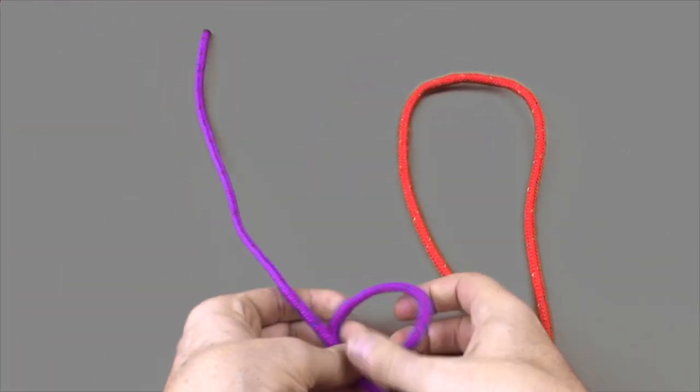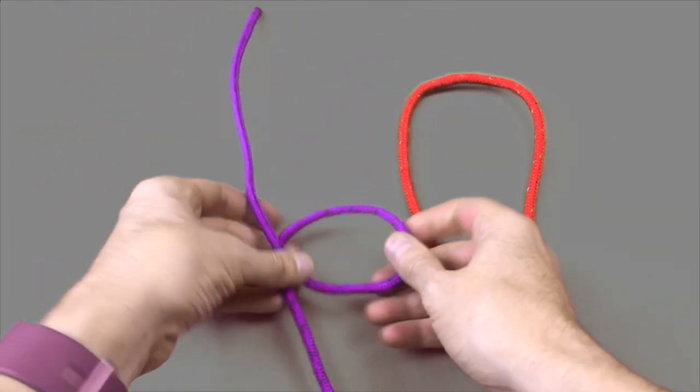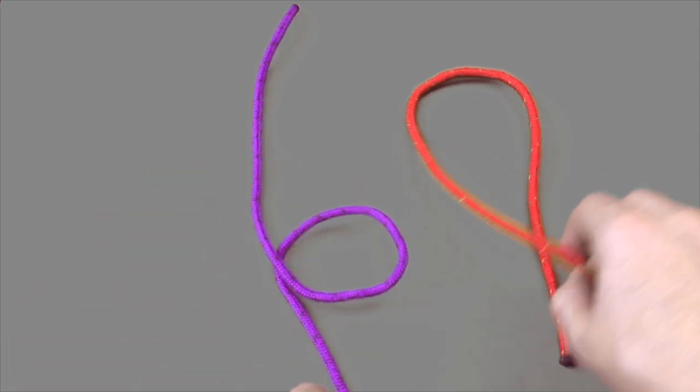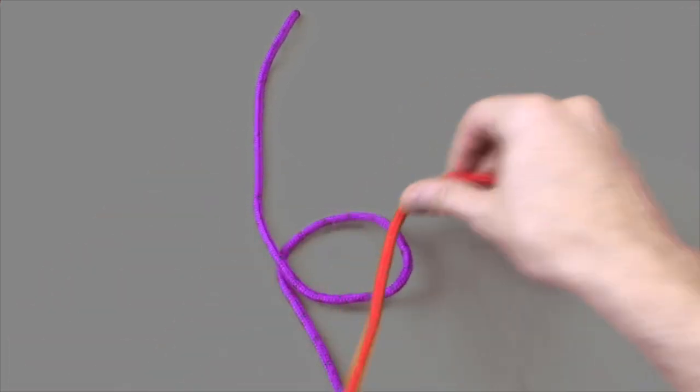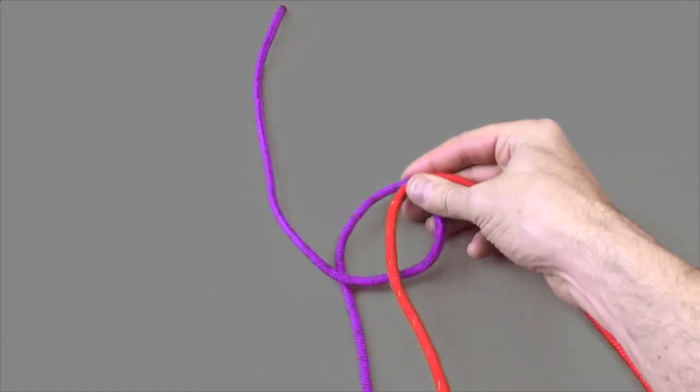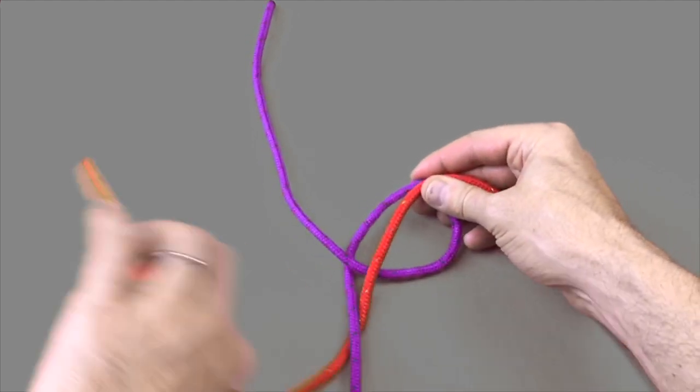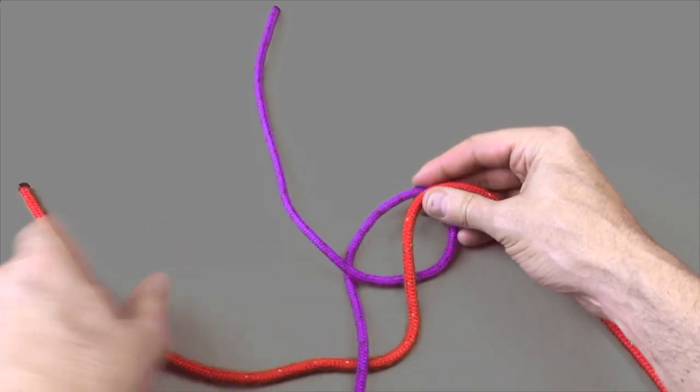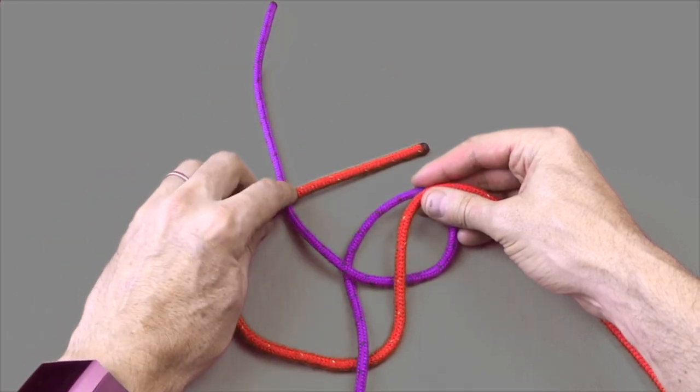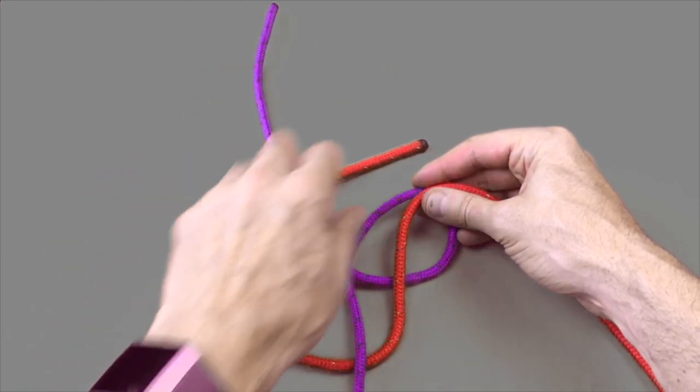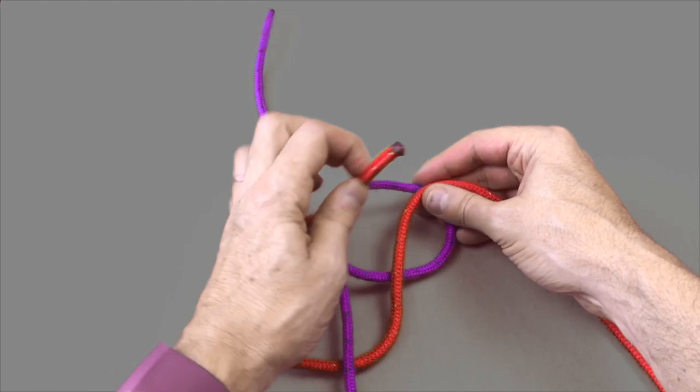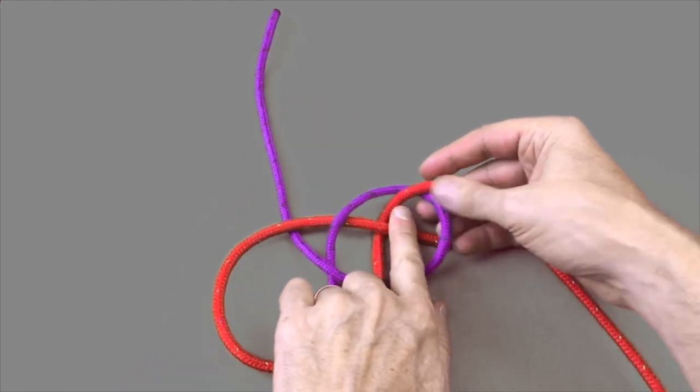Step one is to create a simple loop putting the purple rope over on top of itself. The red cord starting about one o'clock at the top, you want to go over the top of two, then under, then over. So that's under, then over, then under, over, and under again.